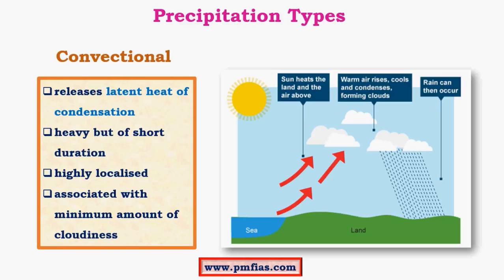Convectional rainfall is associated with minimum amount of cloudiness — we don't see significant sized clouds like nimbostratus. The chief form of clouds in convectional rainfall are cumulonimbus clouds. Cumulonimbus clouds have a huge vertical extent, from the bottom levels of the troposphere to the upper levels — their vertical thickness can be about 10 to 15 kilometers depending on whether it occurs in tropical or temperate regions. In temperate regions the occurrence of convectional rainfall is very low and cumulonimbus cloud formation tends to occur in the form of frontal precipitation. At the tropics the vertical extent would be about 14 to 15 kilometers.